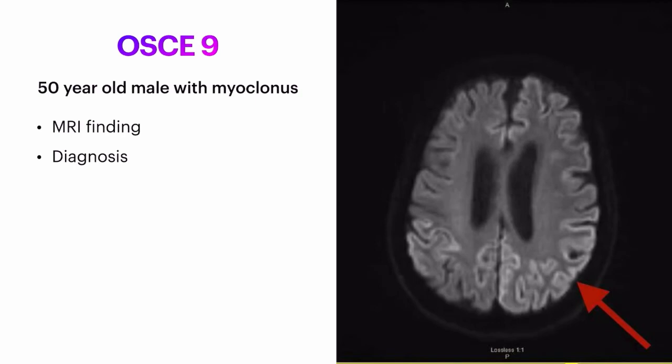Question nine: a 50-year-old male came with complaint of abnormal movements of the body — structural myoclonus. You can see the video of structural myoclonus on YouTube. Write down the MRI findings seen and the diagnosis.